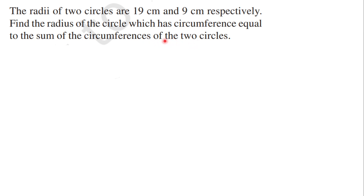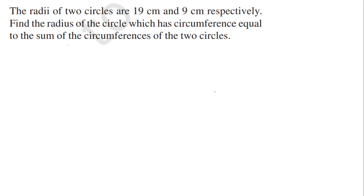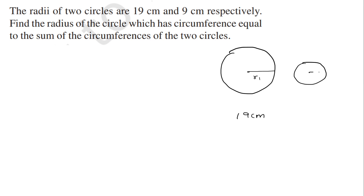The radii of two circles are 19 centimeters and 9 centimeters. Let me draw the two circle diagrams. One circle is having a radius of 19 centimeters — let it be R1 — and the other circle is a smaller circle having a radius R2 which is 9 centimeters.